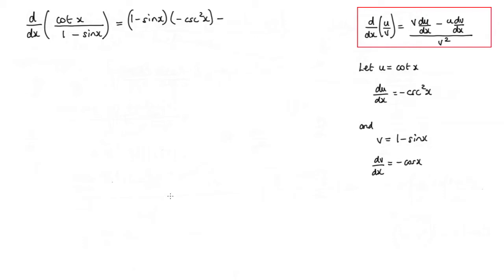Minus u times dv by dx. So that's cot x times by dv by dx, which is negative cos x. Now that's all over v squared, so 1 minus sin x all squared.